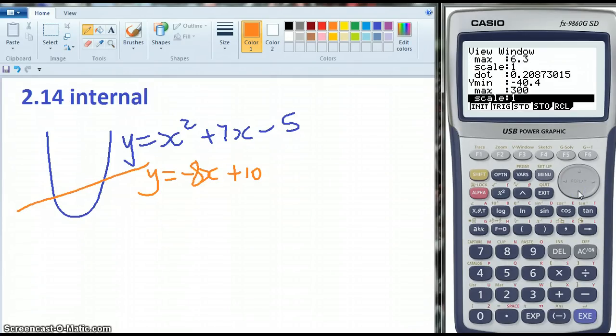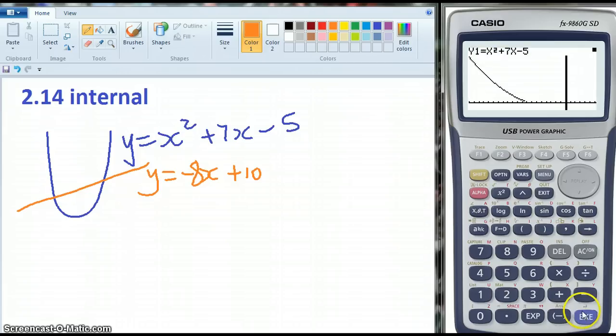I'm just like going all over the place. Execute. Execute. Right. Now I can see both intersections. G-solve intersection. So I've got the first point of intersection.